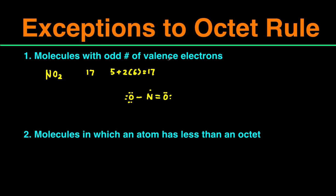So with an odd number of valence electrons, at least one of the atoms are going to be electron deficient. It's going to have less than eight valence electrons. So that's the first category.